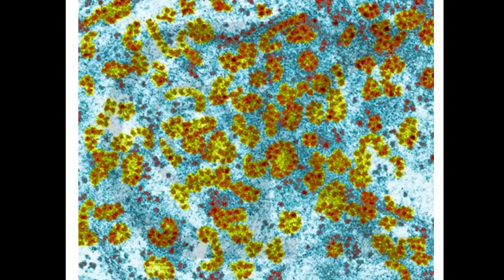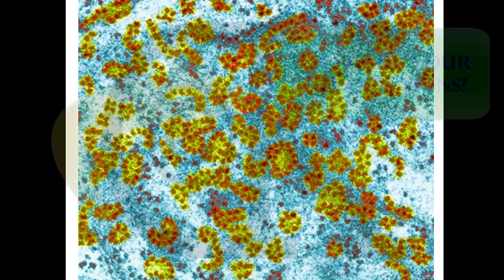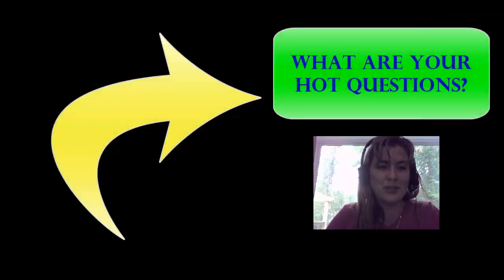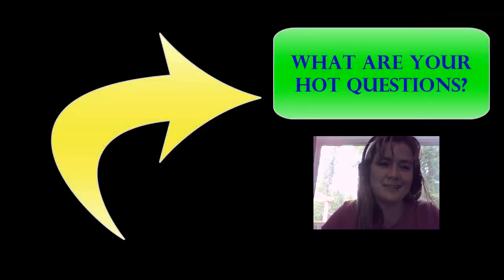Here's a picture of many polysomes inside the cytoplasm of a cell — this is an electron micrograph picture, make sure you can recognize it. Make sure you think about your hot questions, and we'll see you in class.